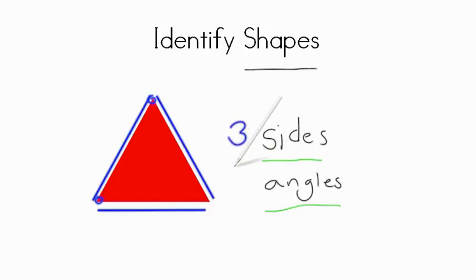We've spoken about angles. These points I'm talking about, those are the angles. So there are one, two, three angles. And this shape is called a triangle.